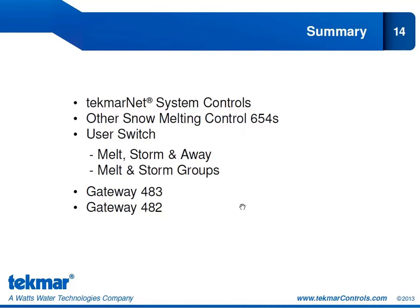We looked at connecting to the gateway 483 — what you can see and control, including moving into different scenes, changing the temperature, and graphing long-term trends in your snowmelt system. We can also connect to a gateway 482 to incorporate your snowmelt system into the home automation system for added convenience and functionality.